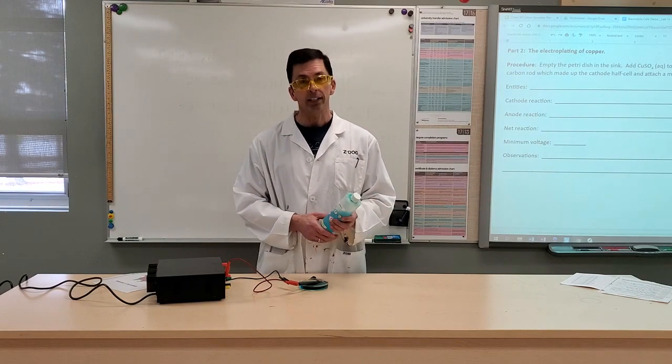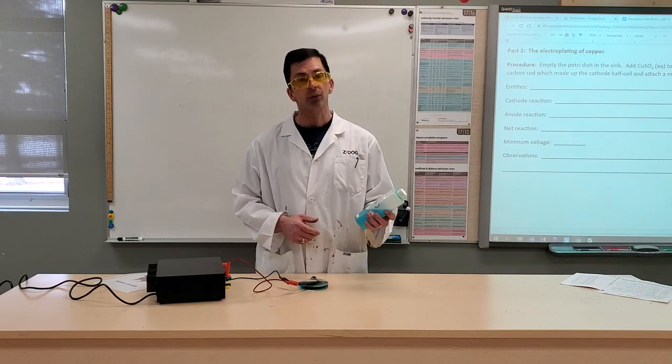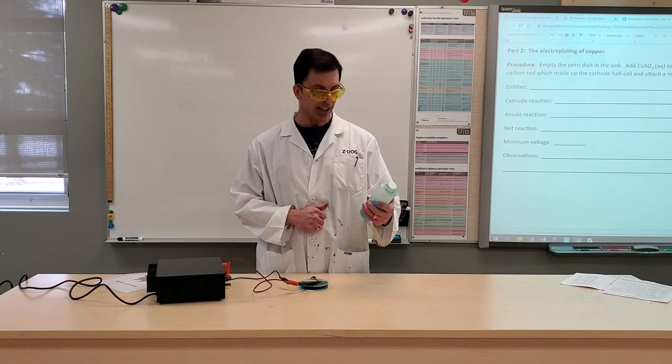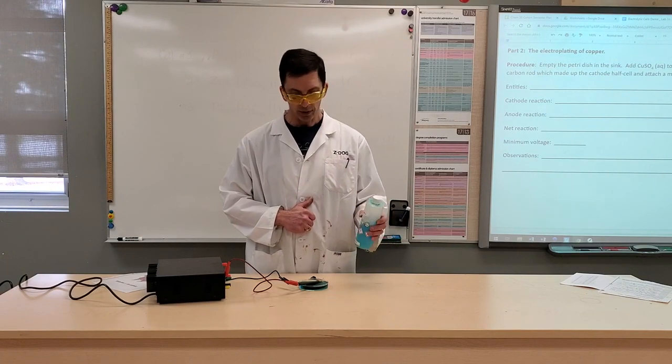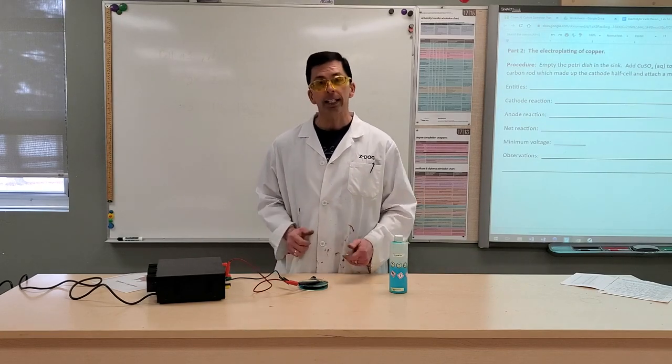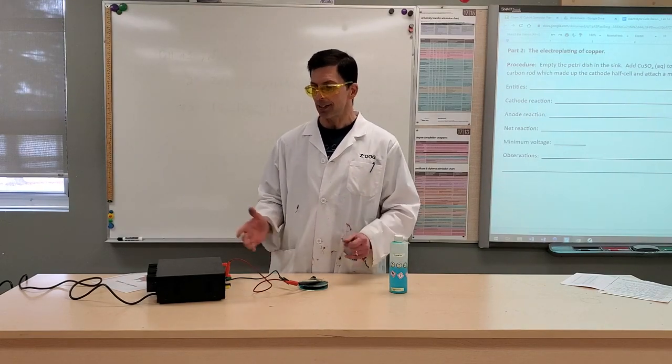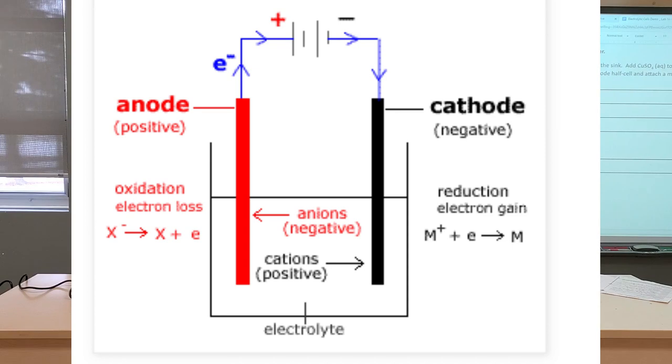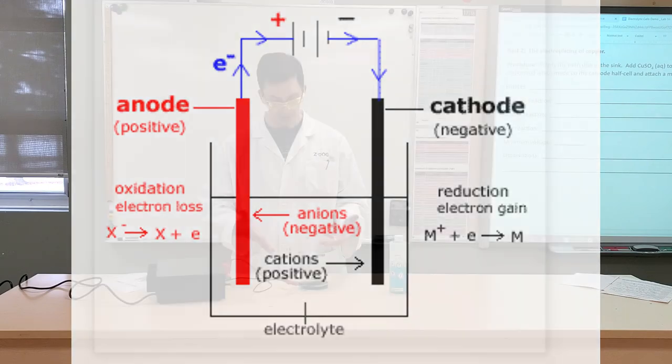So what we've got here today is copper 2 nitrate or copper 2 sulfate can be used as well. We've got a concentration of 0.2 moles per liter. A key difference in electrolytic cells is that we are supplying power, electrical energy, into a non-spontaneous chemical reaction, forcing this reaction to become a spontaneous reaction.